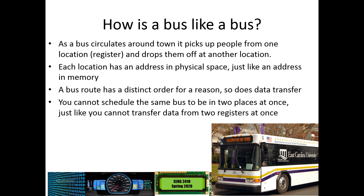When transferring data from one register to another, there are certain orders things have to come in. Especially if you're sending multiple bits, you may be routing things in specific orders. You can't schedule the same bus to be in two places at once — you'll end up with a collision. The same thing is true if you try to put two different registers onto the tri-state bus at the same time.